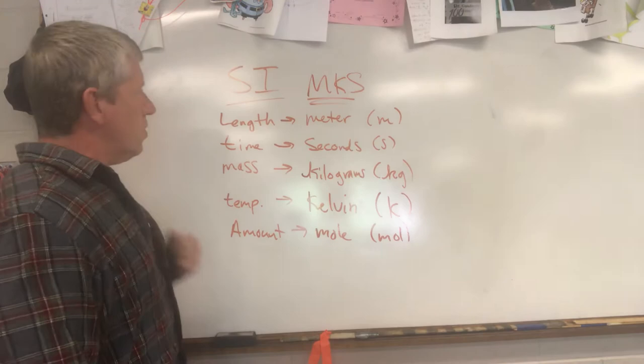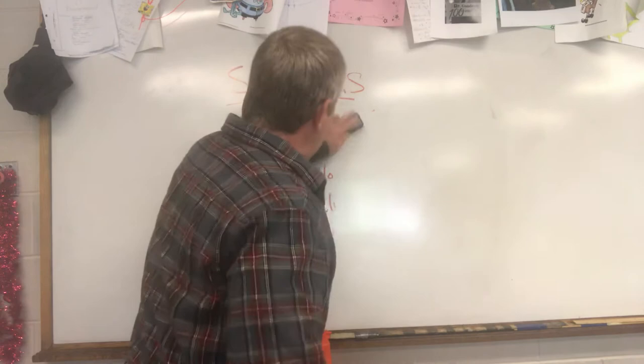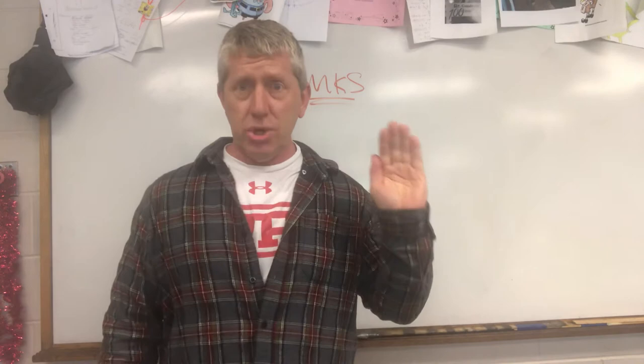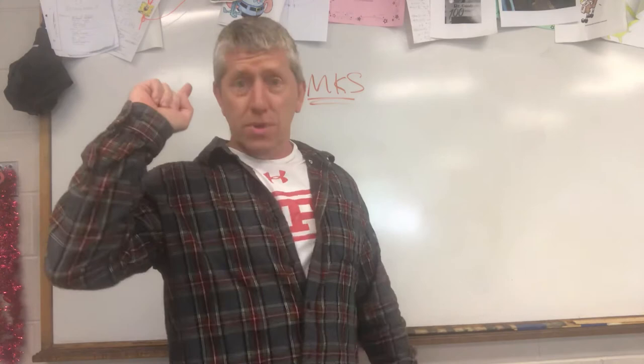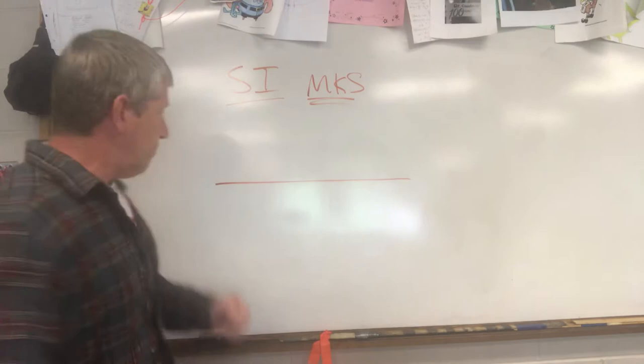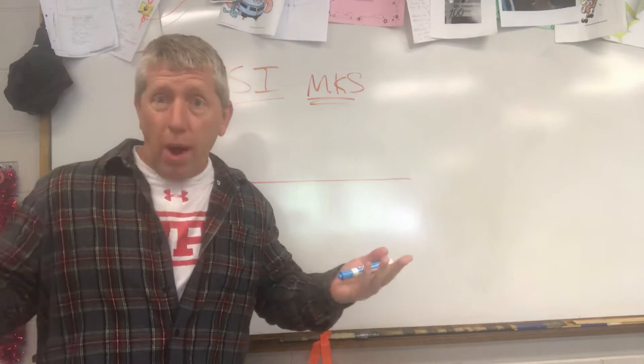The other thing you need to know about the International System are the prefixes. You need to know them — you can't just walk around with a reference sheet like using a German-English dictionary word by word. Just know them. I'll draw a line: prefixes above the line mean larger than one, prefixes below the line mean smaller than one. The line represents the number one.